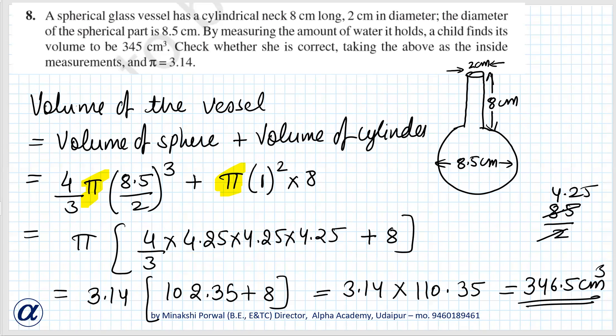Volume what the child found was 345 only, but it is 346.5 cm³. So volume found by child is not correct. This is the answer. Volume found by child is not correct. Actual volume of the vessel is 346.5 cm³.